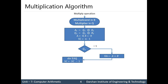The sequence counter counts down. The operation is repeated: the QN value is checked. If QN is 0, the addition is not performed — we only shift. If QN is 0, the 0 is multiplied, meaning the addition step is skipped.